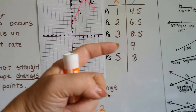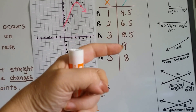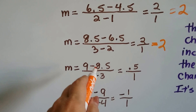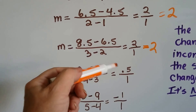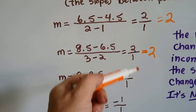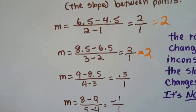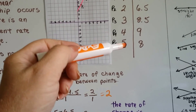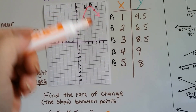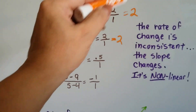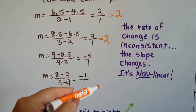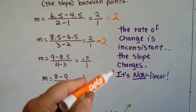Then we do the next one — point 4 to point 3. We have 9 take away 8.5 and 4 take away 3 for our slope formula. 9 take away 8.5 is only 0.5, and 4 take away 3 is 1. That's 0.5 over 1 — that is not the same. Now we're going to compare point 5 to point 4. We've got 8 take away 9 and 5 take away 4. 8 take away 9 is negative 1, and 5 take away 4 is 1. It differed — it wasn't consistent. And because this slope kept changing, we know it's non-linear.